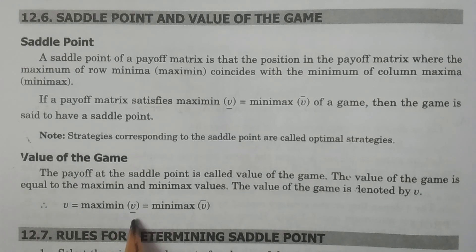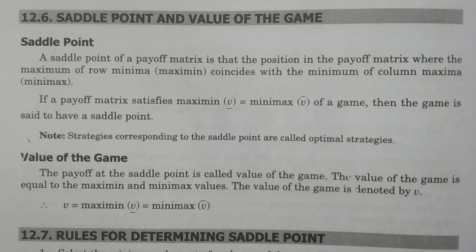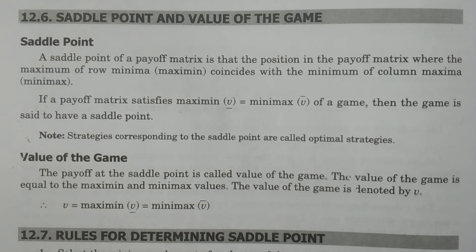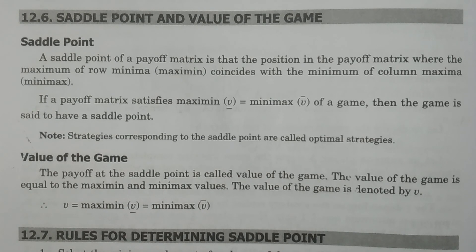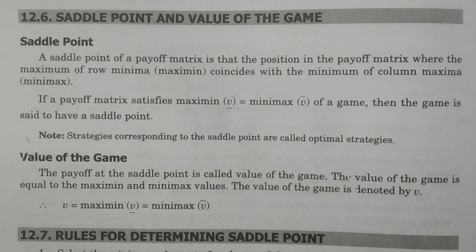The value of the game is equal to maximin — denoted mu underscore — equals minimax — denoted mu upper score. The value of the game is thus equal to maximin equals minimax, denoted by mu. This is the saddle point and value of the game definition.